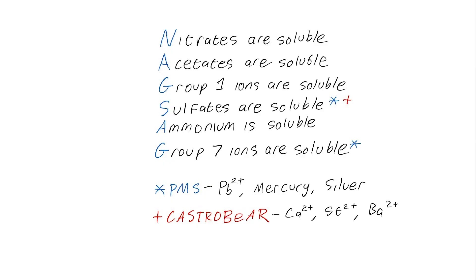The best way to get an understanding of that is to apply it to a factual scenario. For example, silver nitrate is going to be soluble because all nitrates are soluble and there are no exceptions to that rule. However, silver sulfate will be insoluble because, whilst all sulfates are soluble, the exception that applies to sulfate includes silver. You can use these solubility rules to have a good idea of when solutions will and won't be soluble.